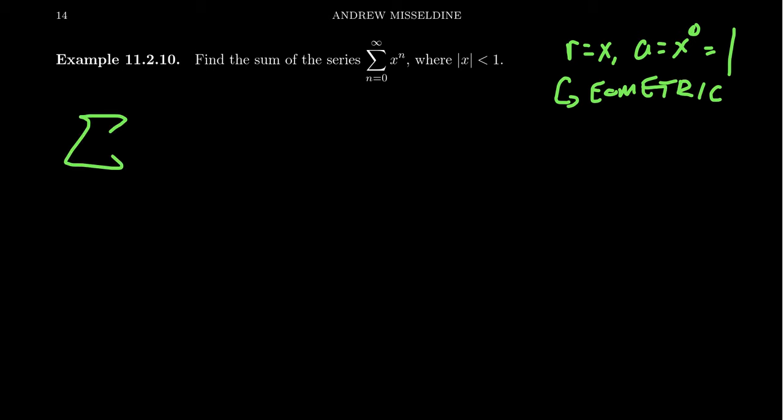We're going to see here that the sum as n equals 0 to infinity of x to the n, this will equal the first term which like we saw is x to the 0. And then we see on the bottom 1 minus the constant ratio which is x right here. We get 1 minus x at the bottom. This simplifies to be 1 over 1 minus x.